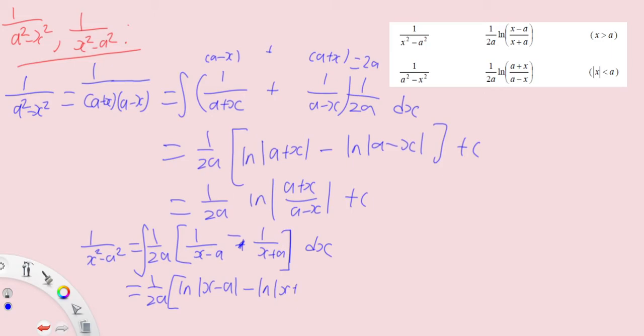ln x plus a plus c and therefore I'll get back 1 over 2a ln x minus a over x plus a plus c.